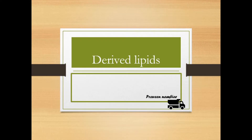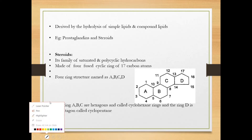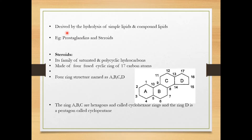Welcome to the last video of the unit on derived lipids. In this video we are going to see what are derived lipids and what are the examples. Derived lipids are the products of hydrolysis of simple lipids and compound lipids. The most important examples for the derived lipids are the prostaglandins and steroids.